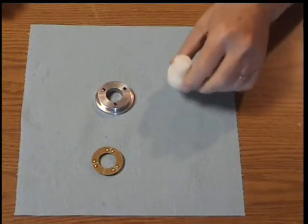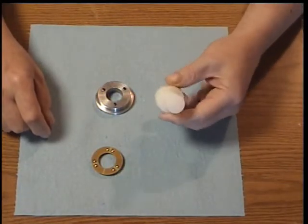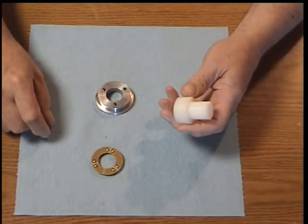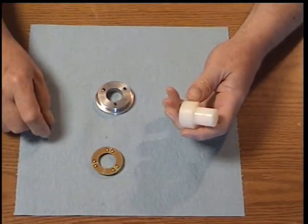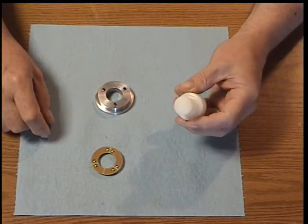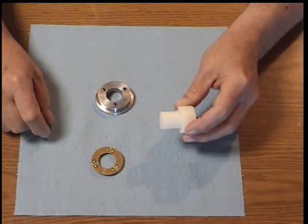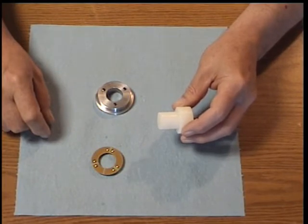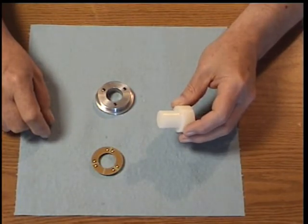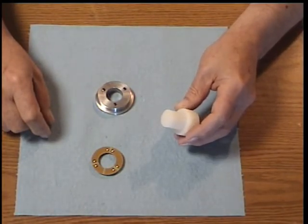For this next step, we've built a little jig. This is just a piece of nylon, it doesn't really matter. If you don't have this, you'll need to eyeball what we're going to do next.